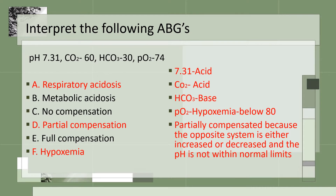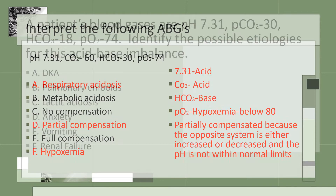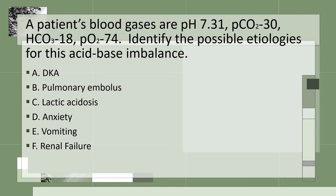The following slide is respiratory acidosis with partial compensation and hypoxemia. The pH is an acid, the CO2 is an acid, the bicarb is a base, and the PO2 is hypoxic because it's below 80. It is partially compensated because the opposite system is either increased or decreased. In this case the CO2 is an acid and the bicarb is a base, and the pH has to be not within normal limits to have partial compensation. This question asks you to identify the acid-base and then identify the possible reasons for this acid-base imbalance.